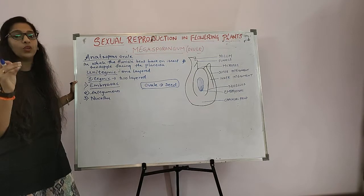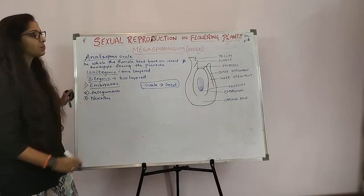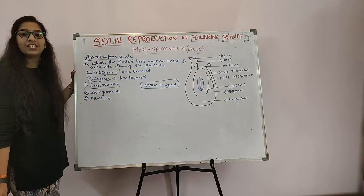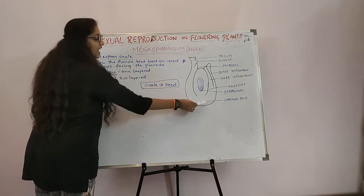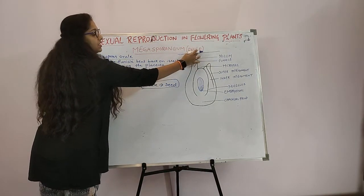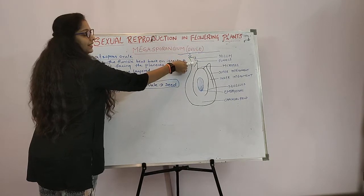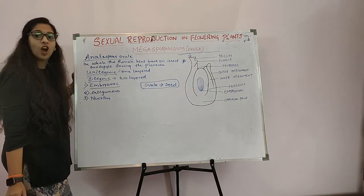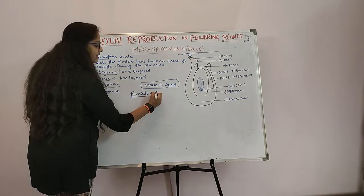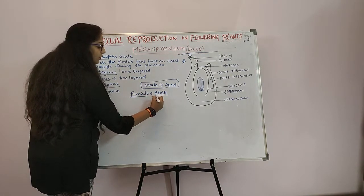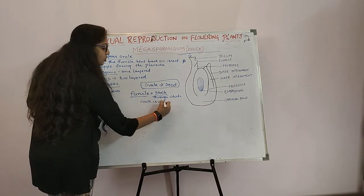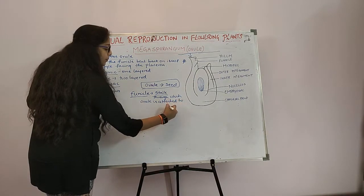Now let me talk about the ovule in detail. The first part is called Funicle. The ovule is attached to the Placenta, and it gets attached by a structure or stalk known as the Funicle. So, the Funicle is a stalk through which the ovule is attached to the Placenta.